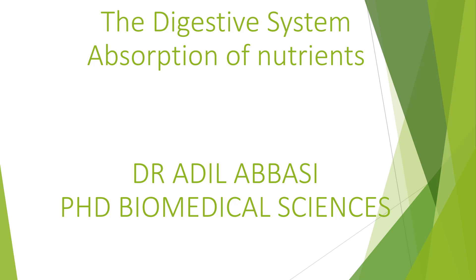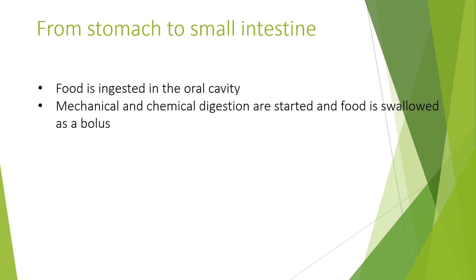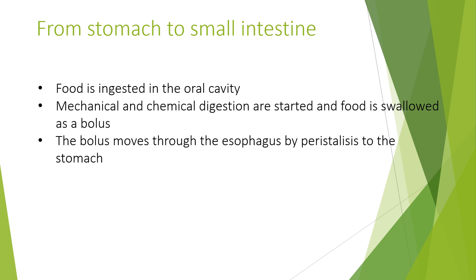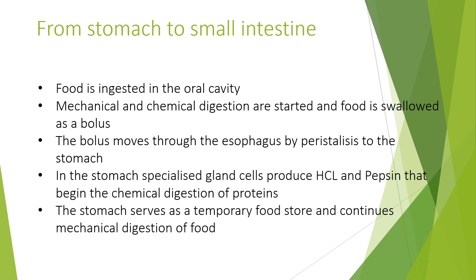Welcome to part 3 of your digestive system, which is absorption of nutrients, coming to the small intestine. Food is ingested in the oral cavity firstly. Mechanical and chemical digestion are started and the food is swallowed as a bolus. The bolus then moves through the esophagus by peristalsis to the stomach. In the stomach, specialised gland cells produce hydrogen chloride and pepsin that begin chemical digestion of the proteins. The stomach serves as a temporary food store to continue with chemical digestion.